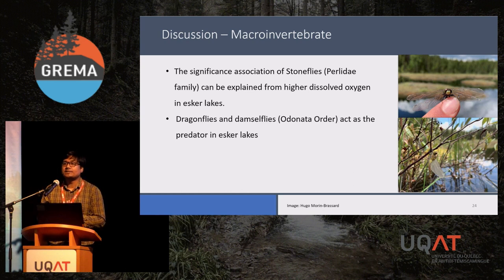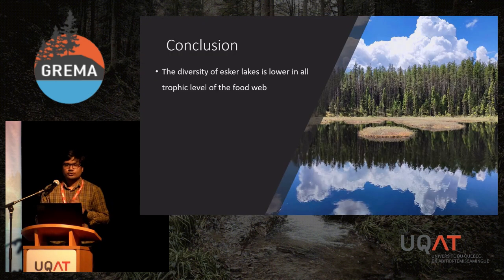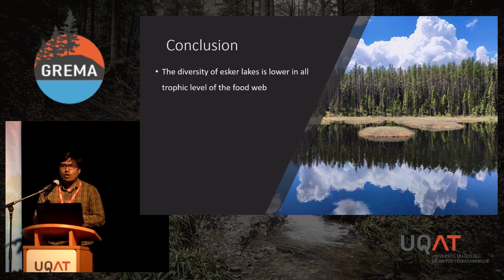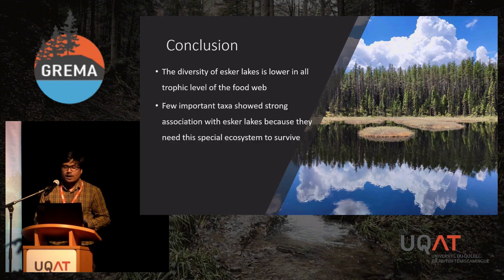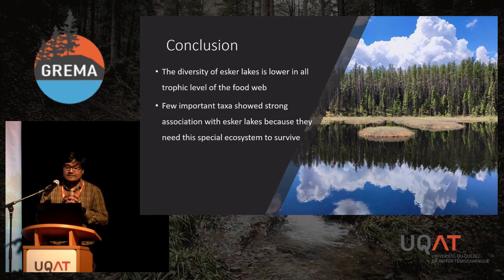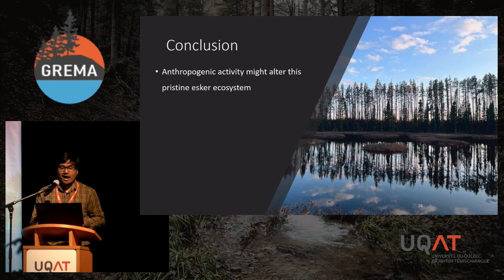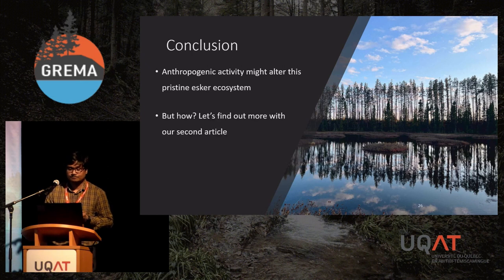For macroinvertebrates, the significant association of stoneflies in ESCR lakes can be explained by the fact that they require more dissolved oxygen in the water to survive. Dragonflies and damselflies also showed a strong association in ESCR lakes because, with the absence of fish, they act as predators in this type of lake. To conclude, the diversity of ESCR lakes is lower at all trophic levels of the food web; however, a few important taxa show strong associations with ESCR lakes because they need this special ecosystem to survive.